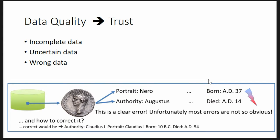To give you a little frame around data quality: there are things like incompleteness — you want to know how complete the data is. There is something about uncertainty, and we have a special presentation on that topic later. Of course there is wrong or inconsistent data, and that's part of the title of this first talk — how to correct it. Here we see an example that is definitely an error, because the dates of birth and death simply cannot be logically consistent.